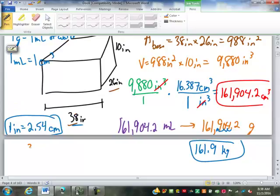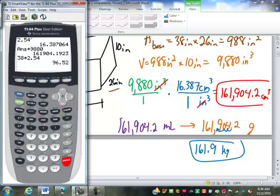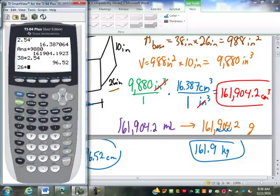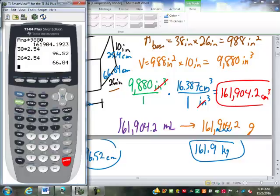So let's convert each of these. 38 inches. One inch is 2.54 centimeters. So 38 times 2.54 is 96.52. So I'm just going to write that in right here. 96.52. 26, I'm going to do the same thing. 26 times 2.54, 66.04. And then 10 times 2.54 is 25.4 centimeters. Are those the numbers you got? Do they look familiar?